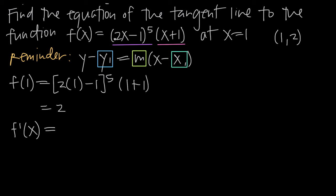Using the product rule, we take the derivative of the first function, 2x minus 1 to the fifth power. Using the chain rule, we bring the 5 out in front, leave the inside function untouched, subtract 1 from the exponent to get the fourth power, and then multiply by the derivative of the inside function, 2x minus 1, which is 2. So the derivative of the first function is 5 times 2x minus 1 to the fourth, times 2. Then we multiply by the second function, x plus 1, left alone.